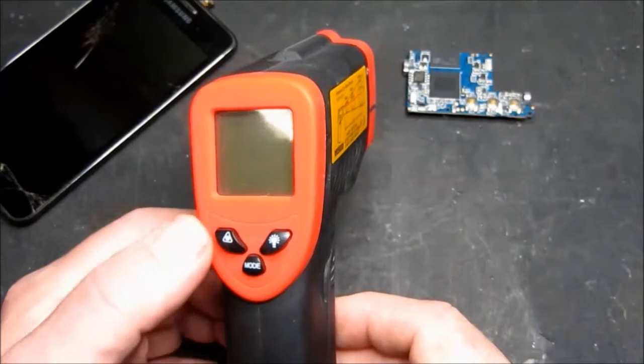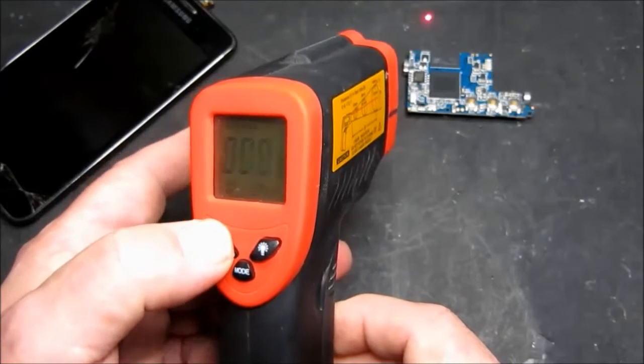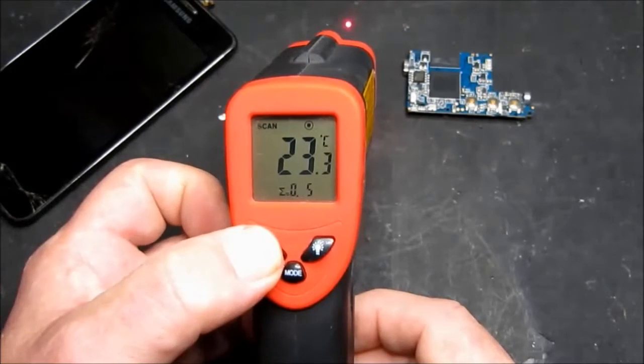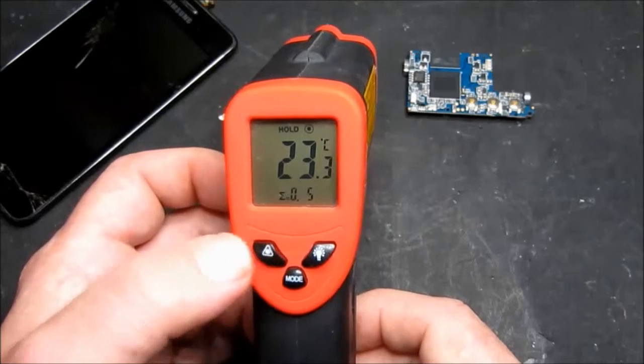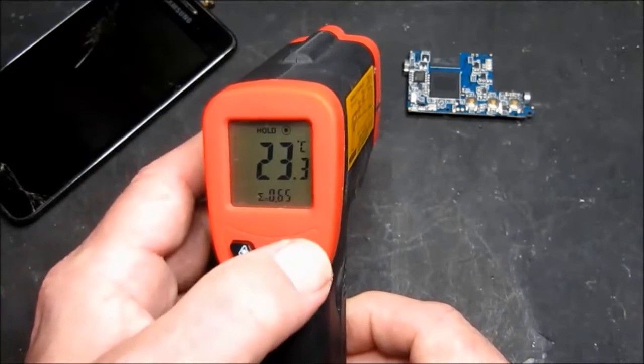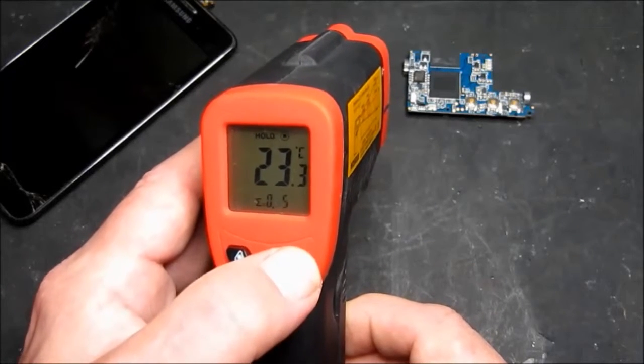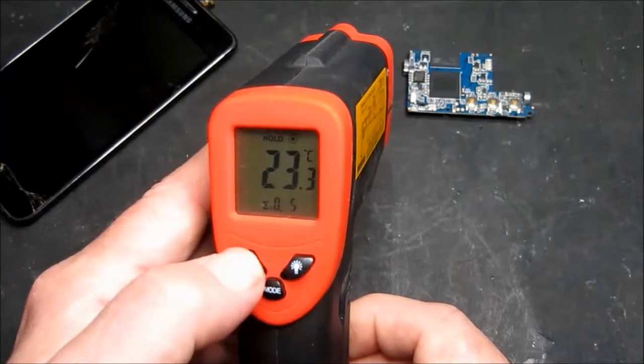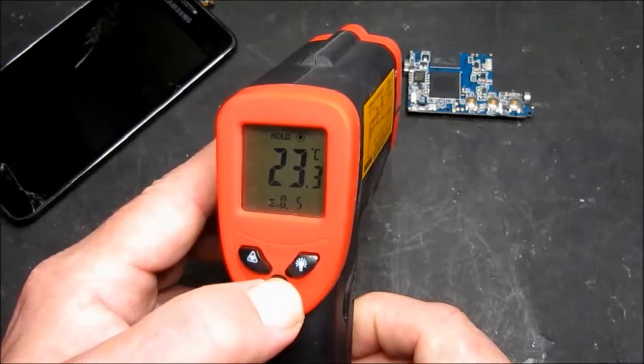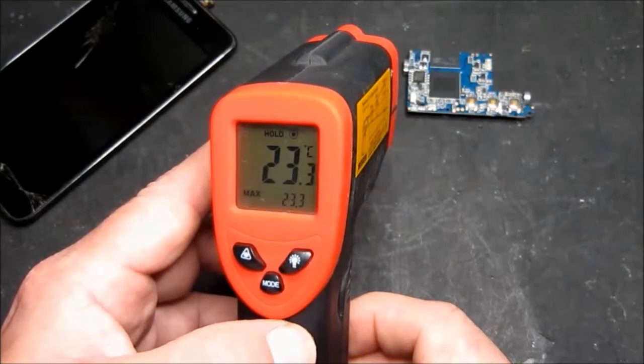So how we do that is we press and hold the laser button whilst we put the trigger on. And there we can see at the bottom of the screen we can now set the emissivity using the laser button or the backlight button just to set that to what we need. So we're going to set that to 0.85 just by pressing the mode key and now the emissivity is set for glass.